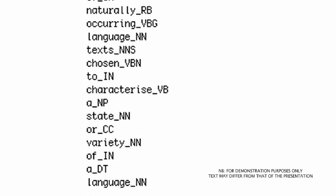'To' — very strange — it thinks 'to' is a preposition. It's not; it's an infinitive marker. So it's made another mistake there, and it therefore thinks 'characterize' is an adjective — gone a bit wild. 'Determine a noun' — then CC, which is coordinating conjunction — and that's correct; it is a coordinating conjunction at phrase level. 'Variety' noun, 'of' preposition, 'a' determiner, 'language' — I'd give it seven out of ten for that. Not bad. So that's tagging for you — just download Q tag from Oliver Mason's webpage; he's a computational linguist at Birmingham University.